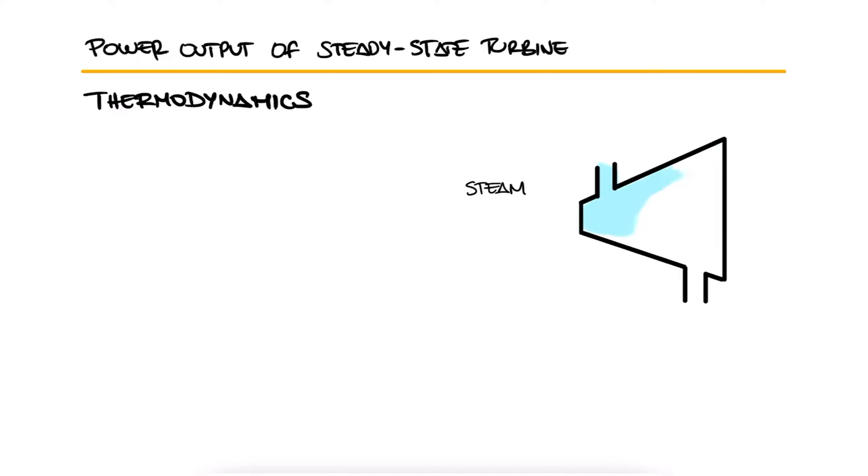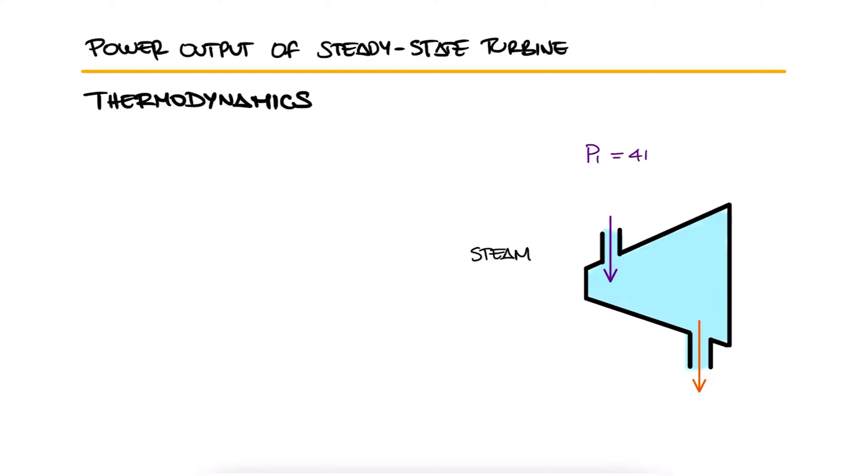At steady state, steam flows through an adiabatic turbine. Steam goes in at 4 MPa, 600 degrees Celsius and 85 meters per second, and exits at 30 kilopascals, 94% quality and 50 meters per second.